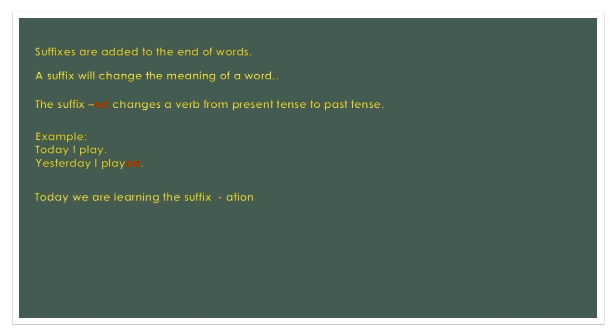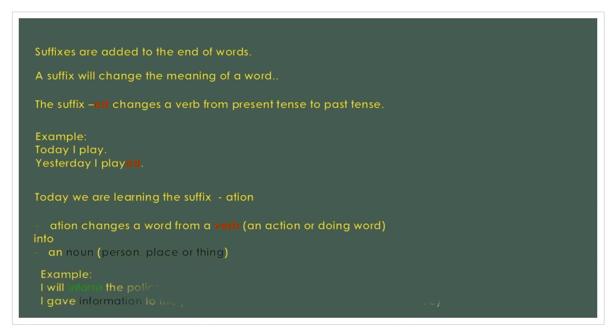Today we're learning the suffix "-ation". "-ation" changes a word from a verb — an action or doing word — into a noun: a person, place, or thing. For example, "I will inform the police" — inform is a verb, an action. "I gave information to the police" — information is a noun.